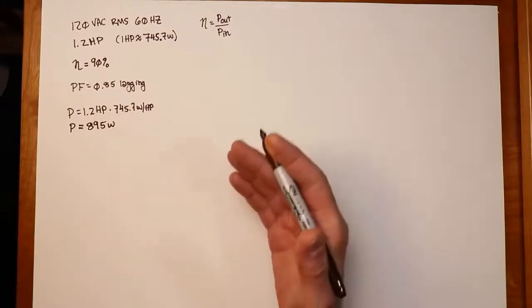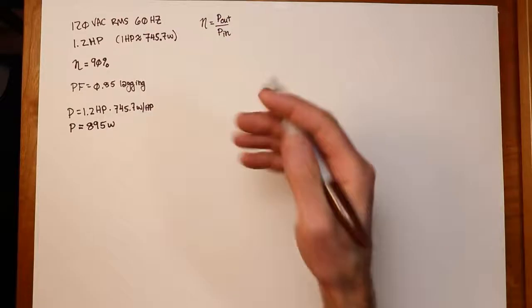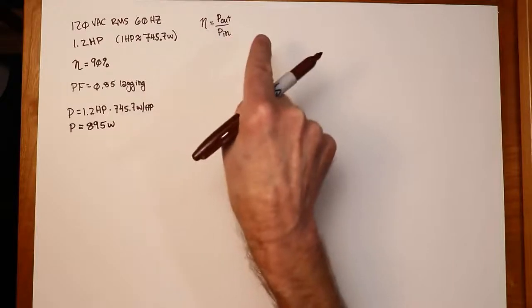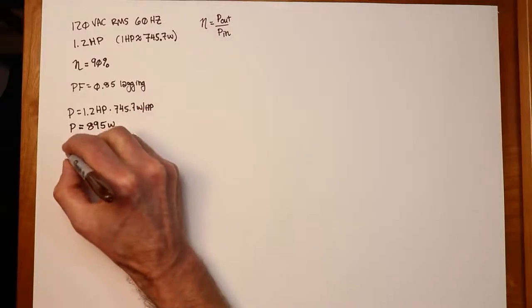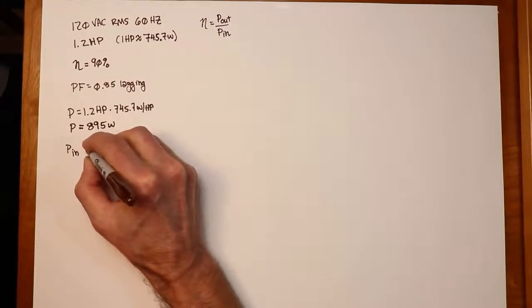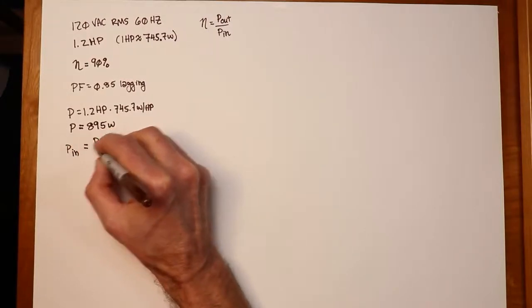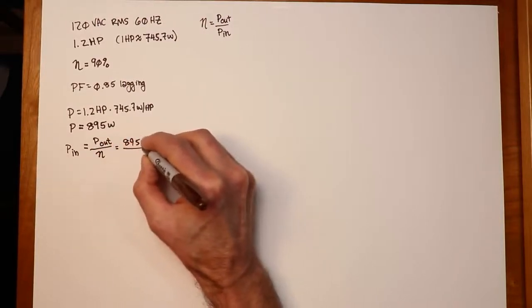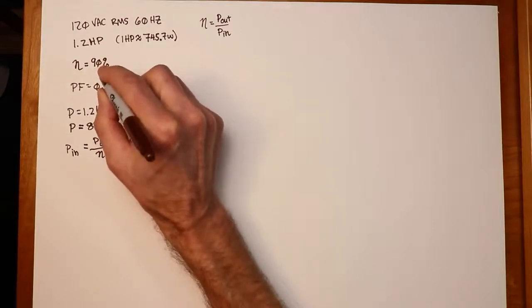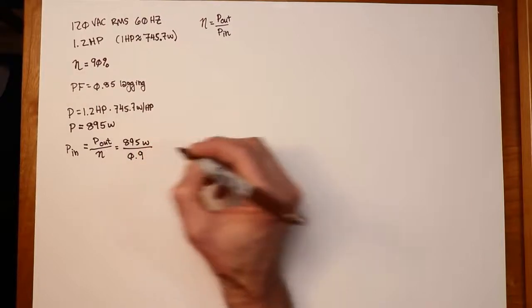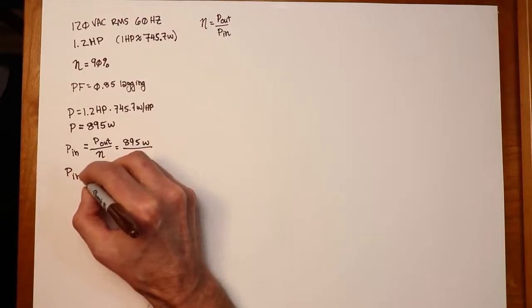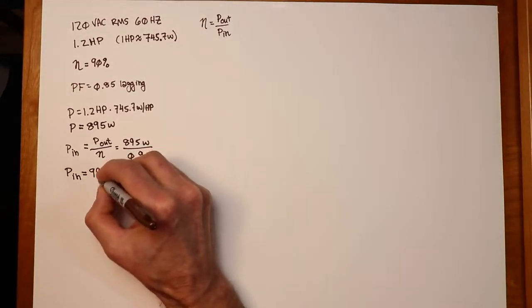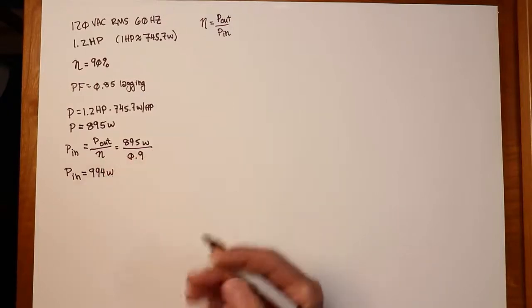So that's the rated output power. Now I want to know what the input power is to get that. In other words, we have to consider what's going on with the efficiency. So we rearrange this equation to get the input power. And so the input power is simply the output power divided by that efficiency. In our case, 895 watts divided by the efficiency expressed as a factor, in other words, 0.9. And the associated input power works out to 994 watts. Nearly a kilowatt. That's what it takes on the way in.